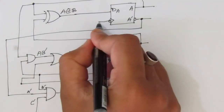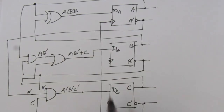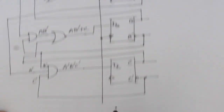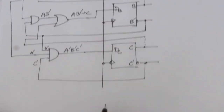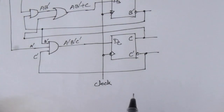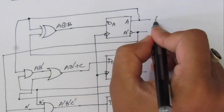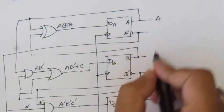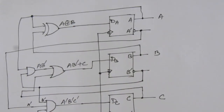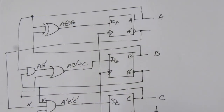Now let us connect the clock input. These are synchronous clock signals. Connect the clock line to all three D flip-flops. The outputs are A, B, and C. This is the complete circuit design for the counter with the sequence 0, 1, 2, 4, 6.